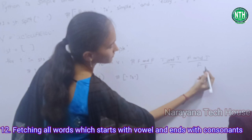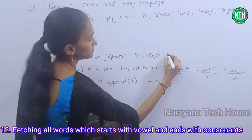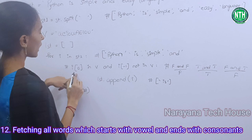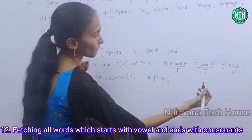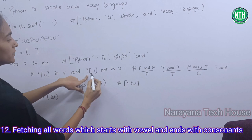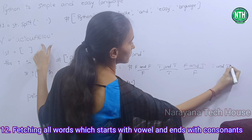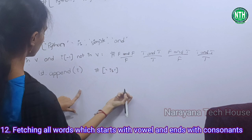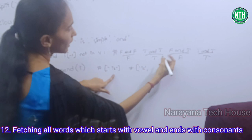Next, i value is 'and'. i[0] = 'a' — is 'a' in V? True. And i[-1] = 'd' — 'd' not in V? True. True and true becomes true, so it is appending. Before 'is' was there, now 'and' is also appending.